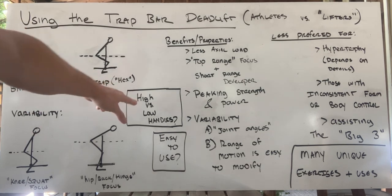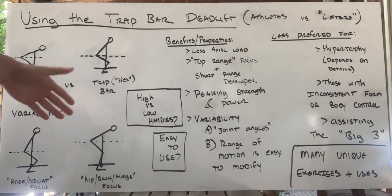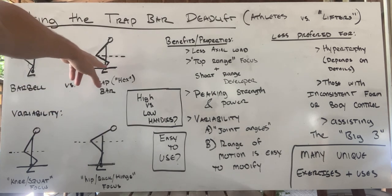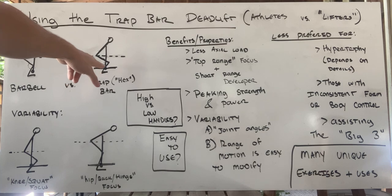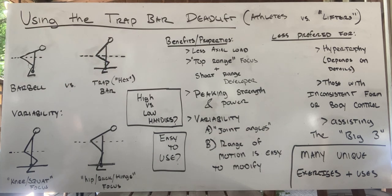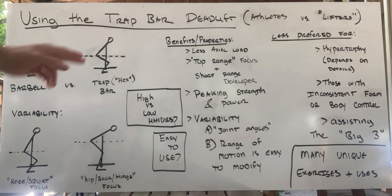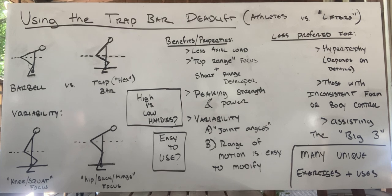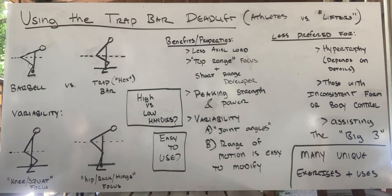There's also the element of high and low handles. Most trap bars have a handle that comes up higher than where the weights sit, which shortens the range of motion. If you flip it around, you can grab the low end of the handles. The high handles let you stand more upright because your hands don't need to come as low, while the low handles bring your hands lower and increase the range of motion.